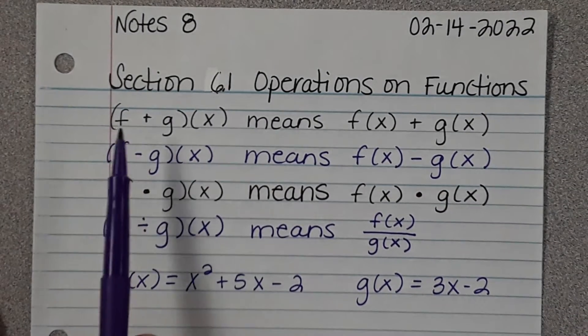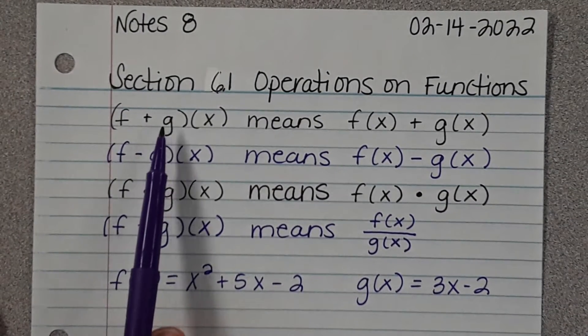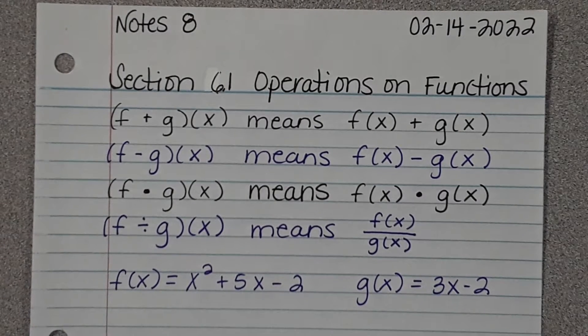So here we go. If you see something that looks like this, it means take f of x and g of x and add them. If you see with a subtraction, subtract them, multiply them, divide them. When we get to the division one, you are going to have to do a restriction and we'll talk about the restriction.